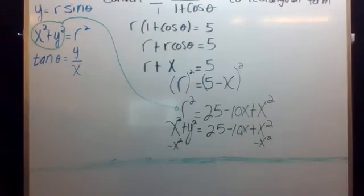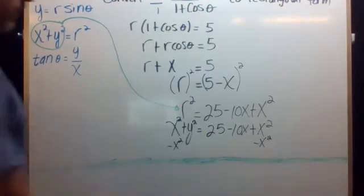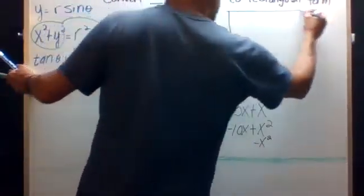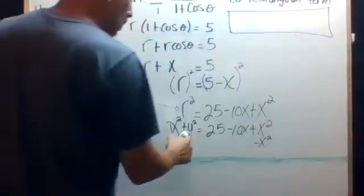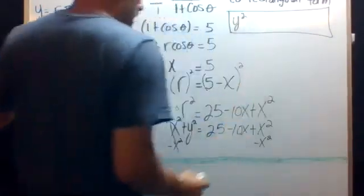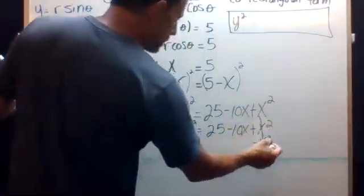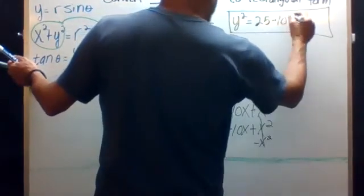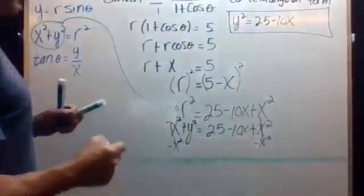And what are we left with here? We get what we're looking for, y squared. So these cancel out. So we get our final answer. y squared equals 25 minus 10x. So there's our rectangular form.